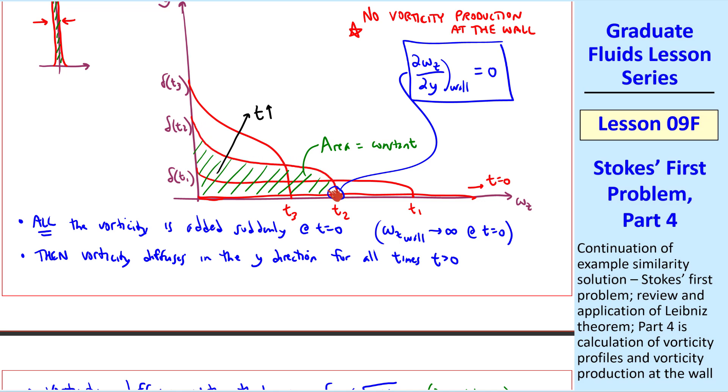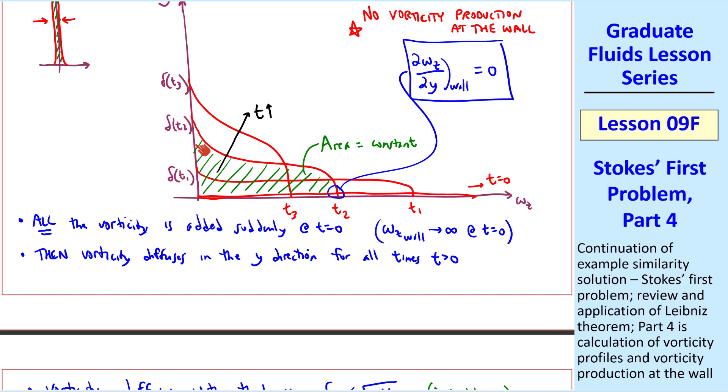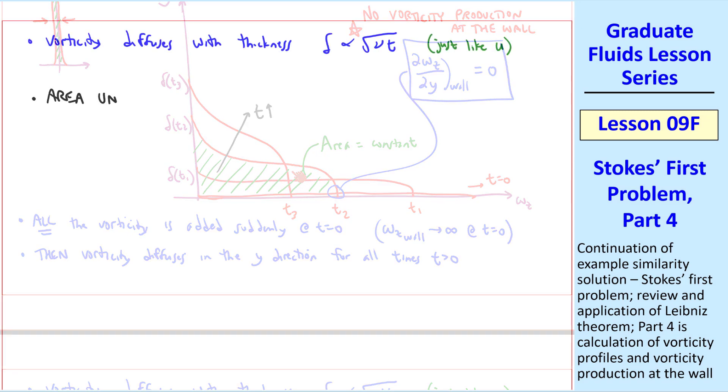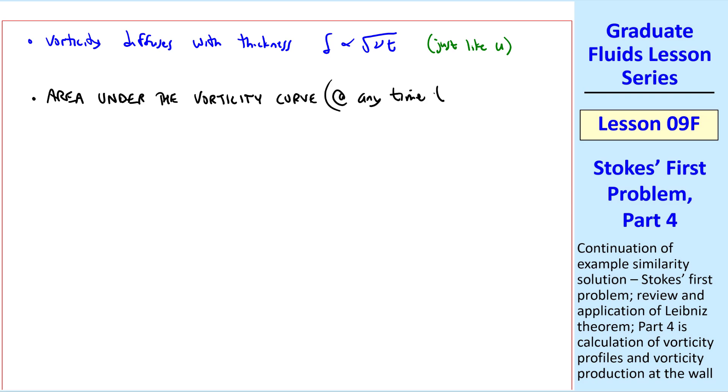As I said, the area under the vorticity curve is constant. All the vorticity is dumped into the flow at time t equals zero. And there's no production of vorticity after that. It simply diffuses with time. So can we calculate this constant area? In other words, the area under the vorticity curve at any time t. Well, the area is the integral from zero to infinity of omega z dy. And since omega z dy reduced to minus del u del y, we write this integral, which is actually a trivial integral. It's just negative u evaluated from y equals zero at the wall to y equal infinity, far above the wall. Well, at y equal infinity, u is zero. The effect of the wall hasn't diffused up that high yet. And at the wall, little u is capital U. So this reduces to capital U.